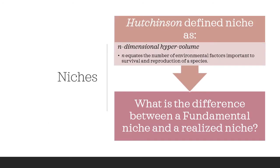Hutchinson defined the niche as an n-dimensional hypervolume, where n is the number of environmental factors important to the survival and reproduction of a particular species. One factor might be the amount of food, another might be the amount of space, another might have to do with temperatures — you just keep adding factors and factors into some n-dimensional hypervolume.